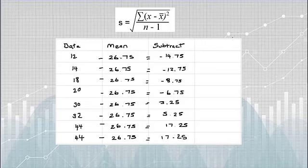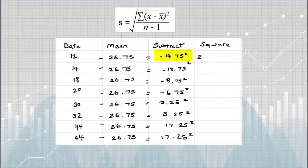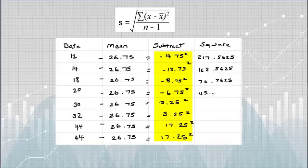The next part in the formula is telling me to square all of these results. So negative 14.75 squared is 217.5625. And I'm going to do exactly the same for the rest of the numbers in the column, going down and squaring them.